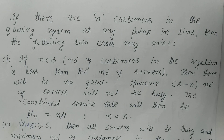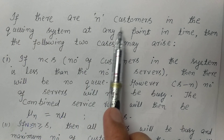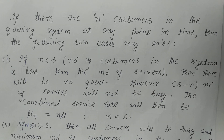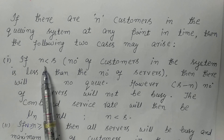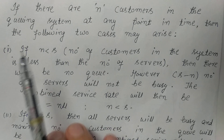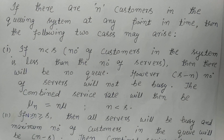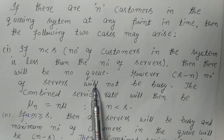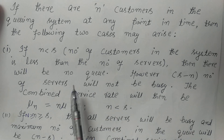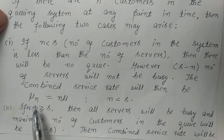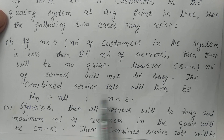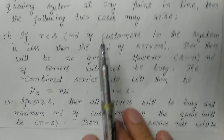Now, as in the previous model, if there are N customers in the queuing system at any point in time, the following two cases may appear. Here S represents the number of servers and N represents the number of customers. The first case: if the number of customers N is less than the number of servers S, there will be no queue, and S minus N servers will not be busy. The combined service rate will be N·μ when N is less than S.